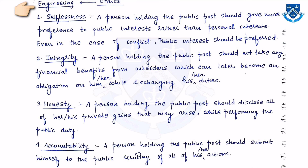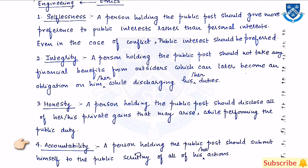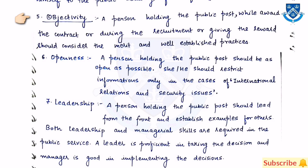These are the seven principles that public service engineers must follow. The first principle is selflessness, then integrity, then honesty, then accountability, then objectivity, then openness, and the last one is leadership.